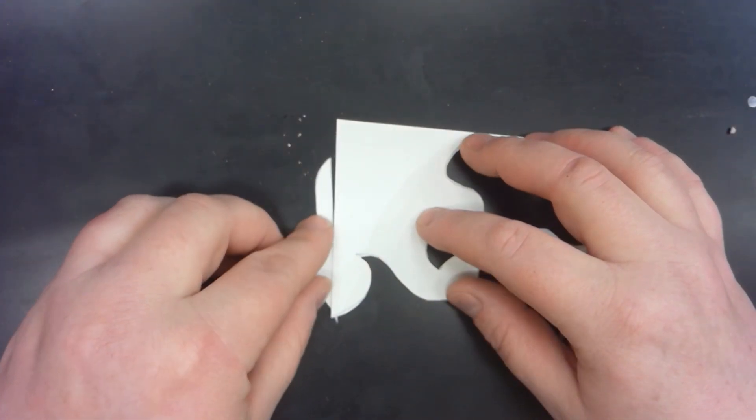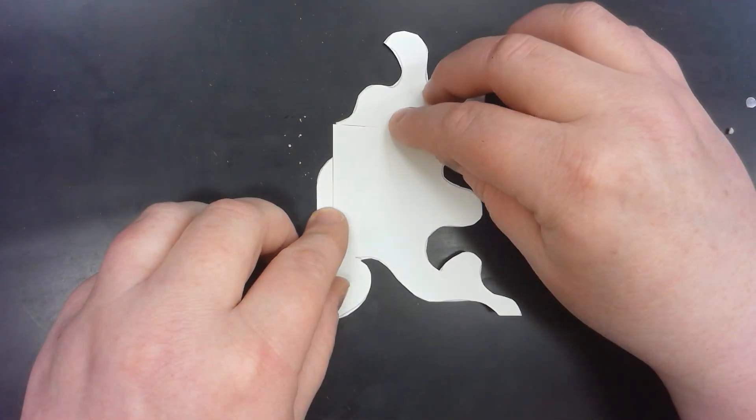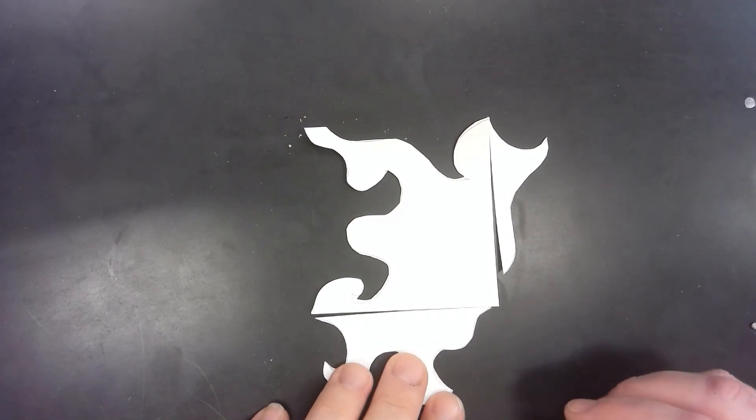You just want to make sure that you have one flat side touching another flat side and that you line up the corners. You want to make sure that you're not flipping it over because that would completely change the design.